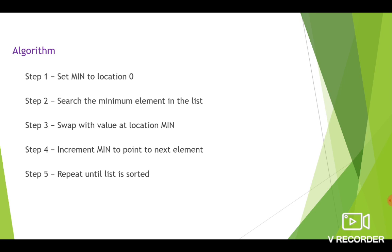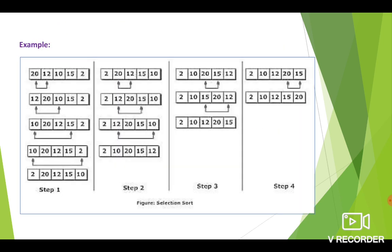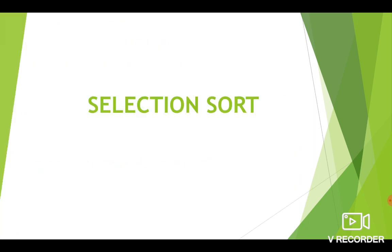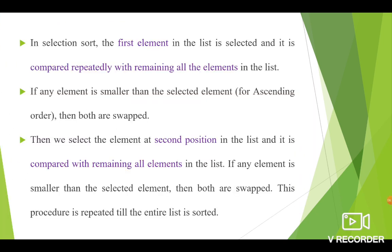We are going to see the algorithm for the sorting. First, we have to set the min value to location 0 and search the minimum element in the list. Then swap it with the value at location min, and increment min to point to the next element. The same steps are repeated until the list is sorted. With this, we are concluding the selection sort algorithm. Thank you all.